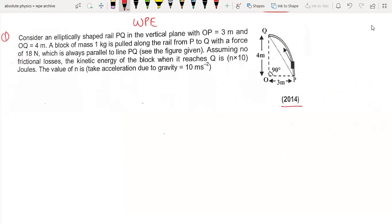Consider an elliptically shaped rail PQ in a vertical plane with OP equals 3m and OQ equals 4m. A block of mass 1 kg is pulled along the rail from P to Q with a force of 18 newton, which is always parallel to the line PQ.